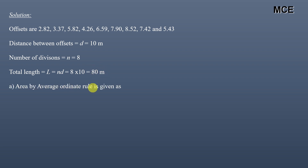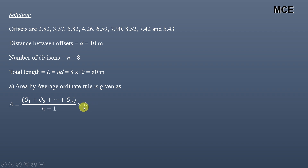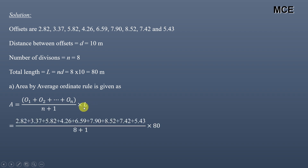Area by the average ordinate rule is given as: sum of ordinates divided by (number of divisions + 1), multiplied by the total length of line. So: (2.82 + 3.37 + 5.82 + 4.26 + 6.59 + 7.90 + 8.52 + 7.42 + 5.43) divided by (8 + 1), into 80 — which equals 463.38 square meters. This is the area by the average ordinate rule.